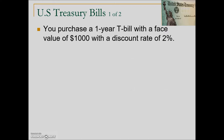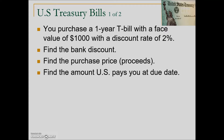So let's take a look at an example. You decide to loan $1,000 to the U.S. government and you do that through the purchase of a one-year T-bill. It has a face value of $1,000 with a discount rate of 2%. T-bills are treated as discount notes, and the following questions are being asked: find the discount, find the purchase price, and find the amount the United States government will eventually pay back to you at the maturity date.